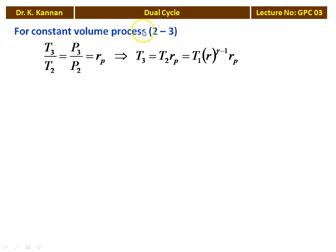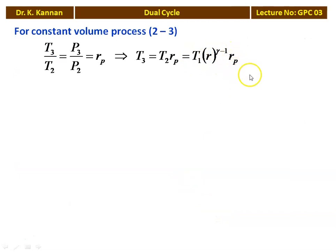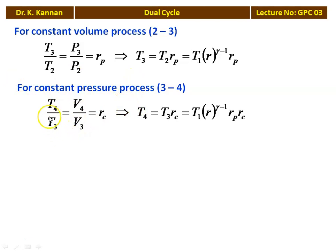For the constant volume heat addition process 2-3: T3/T2 = P3/P2 = Rₚ (pressure ratio), so T3 = T2 · Rₚ = T1 · R^(γ−1) · Rₚ. For the constant pressure heat addition process 3-4: T4/T3 = V4/V3 = Rᶜ (cut-off ratio), so T4 = T3 · Rᶜ = T1 · R^(γ−1) · Rₚ · Rᶜ.